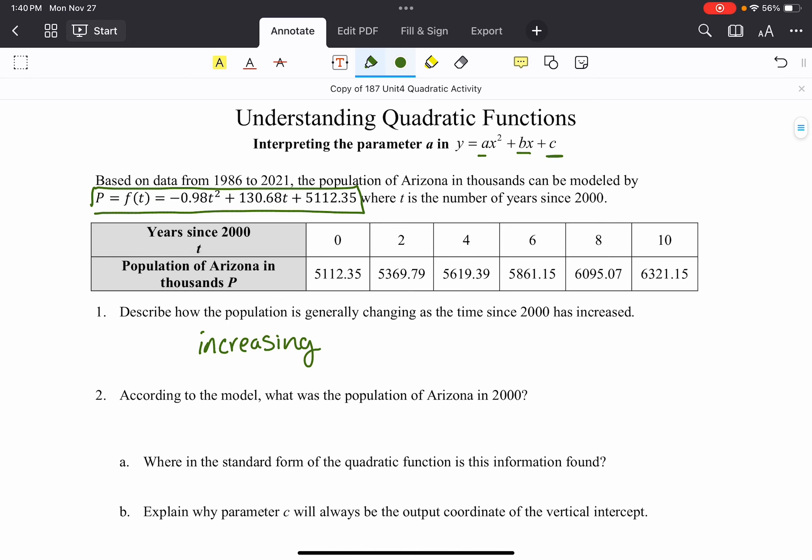Now the next question is asking what is the population of Arizona in the year 2000. And that's right here in our table. The year 2000 would be our initial value, and so we have 5,112.35 thousand people. Now if we take a look, this particular number does make an appearance in the equation. And so this value right here, notice it's the same as that number in our function. And so this is in that c position right there. And so this is our c value.